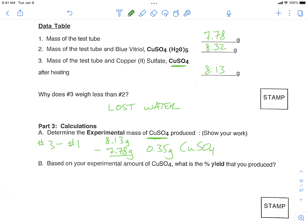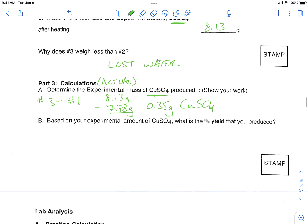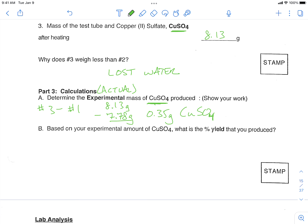This is called our experimental mass. Sometimes this is called the actual mass. And that terminology we're going to end up using for our percent yield down below. So we want to calculate our percent yield here, and the formula for percent yield is what we call actual over theoretical times 100.